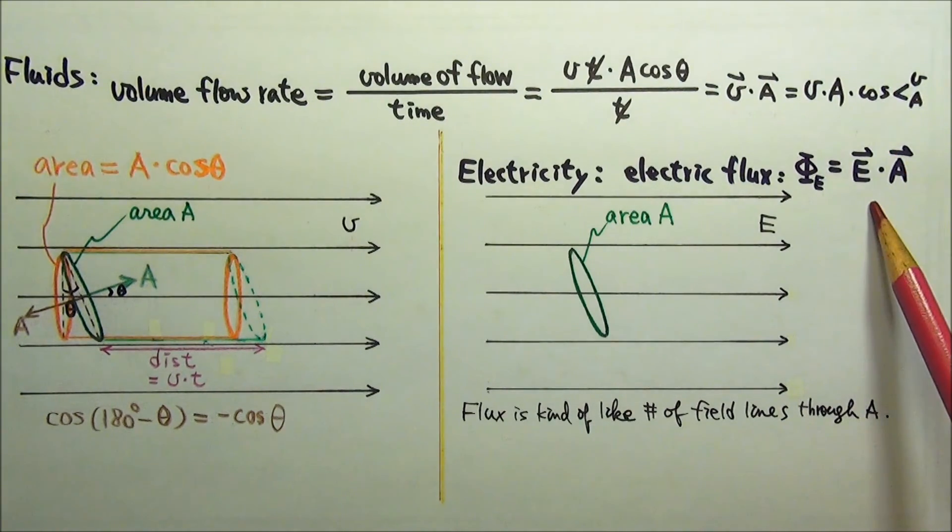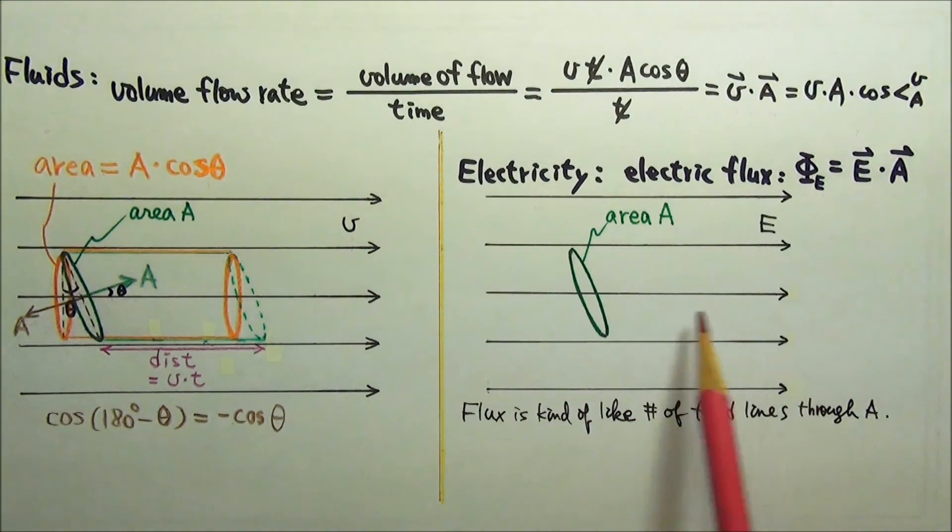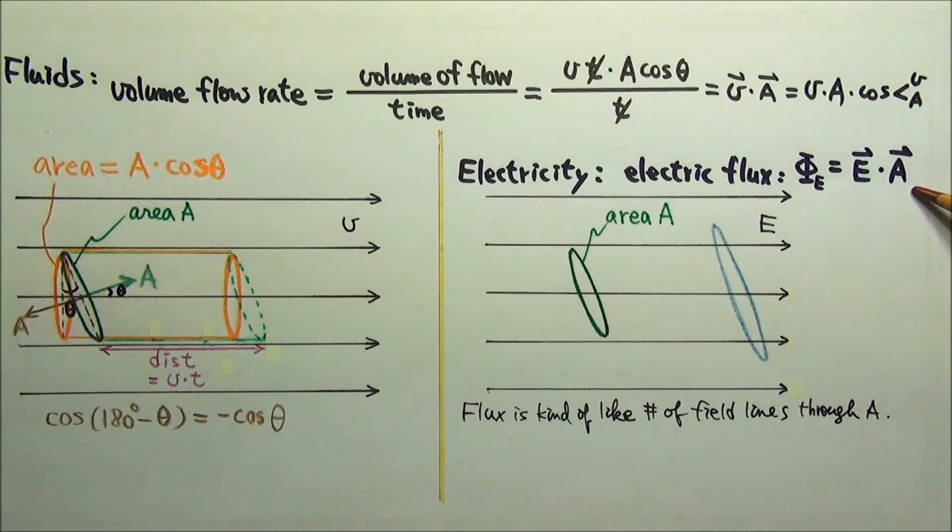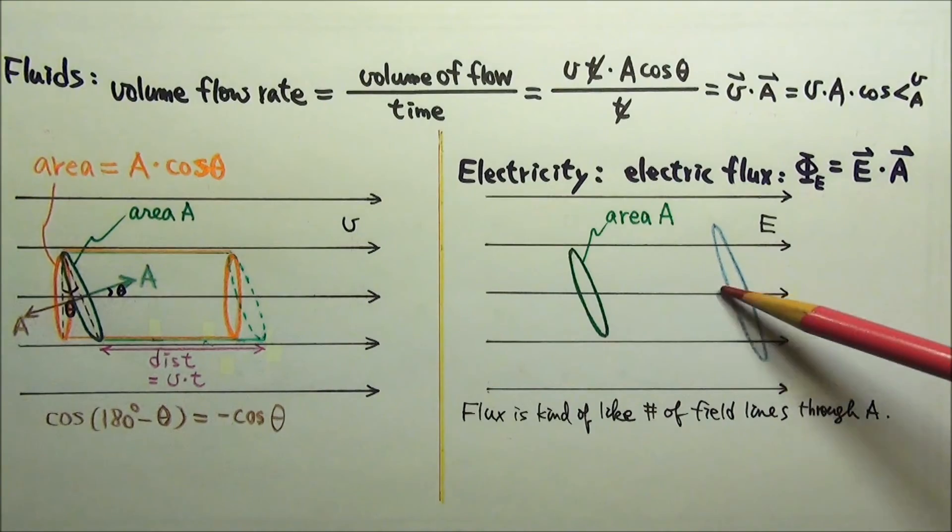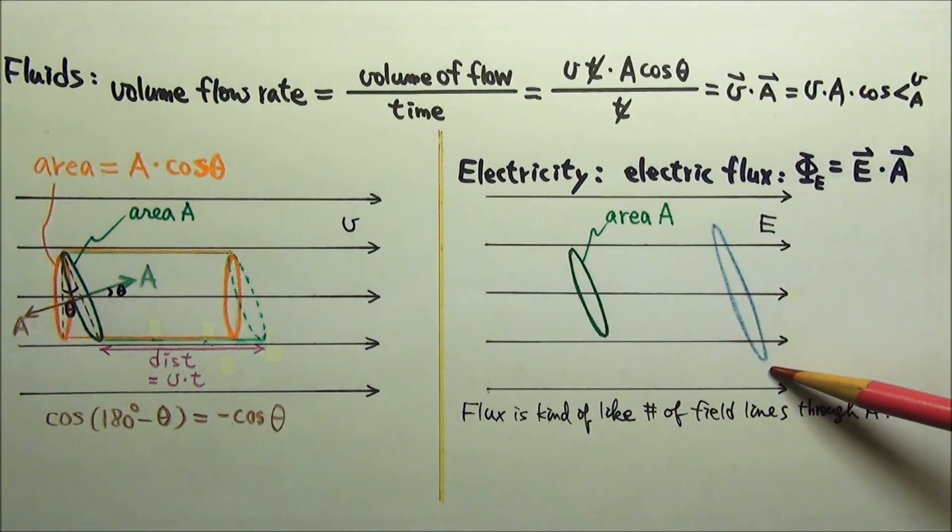Flux is kind of like the number of field lines going through an area. For example, when the field is stronger, the field lines are denser. The flux increases, and more field lines go through the area. When the area gets bigger, the flux increases, and more field lines go through the bigger area.